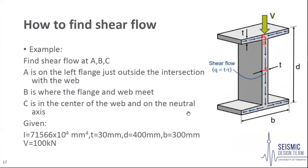To better understand how to find shear flow, we look at an I-beam example. Consider an I-beam where dimension t is 30 mm, d is 400 mm, and b is 300 mm. The second moment of area is 71,566 × 10⁴ mm⁴. A load V of 100 kN is applied on the vertical plane of symmetry. We must find shear flow at points A, B, and C: A is on the left flange just outside the intersection with the web, B is where the flange and web meet, and C is in the centre of the web at the neutral axis.